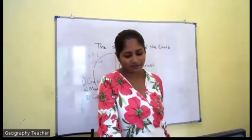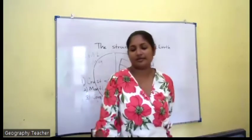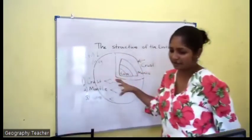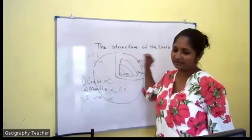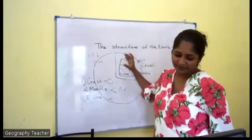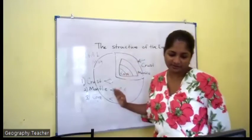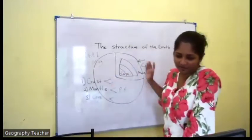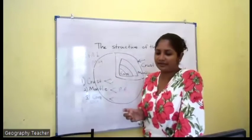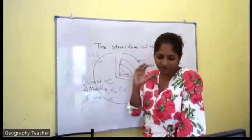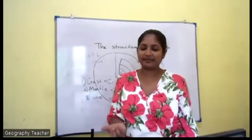According to the composition, the core is divided into two parts: inner core and outer core. The outer core is liquid metal, composed of nickel and iron.